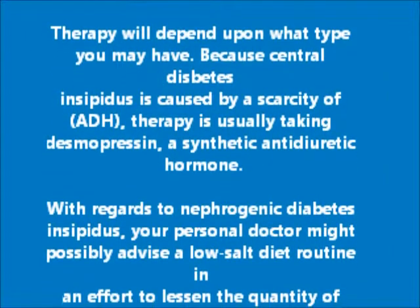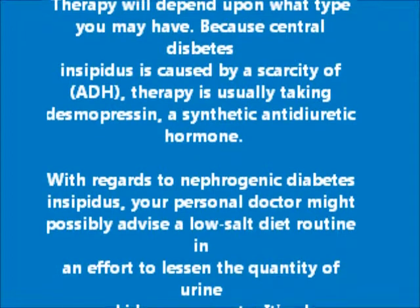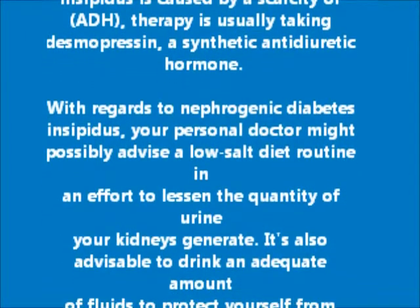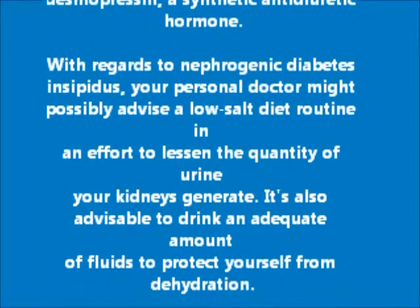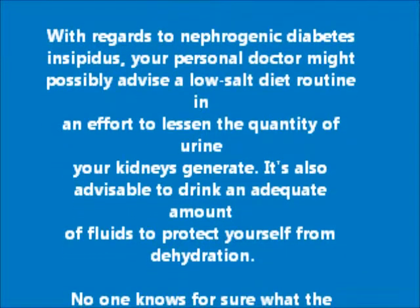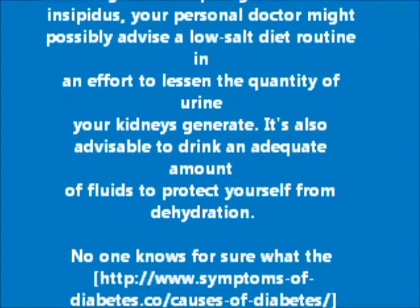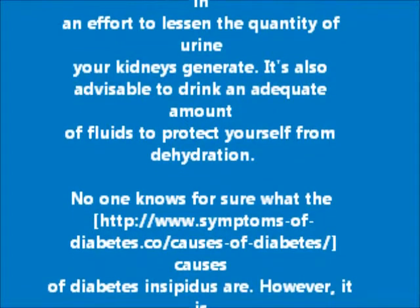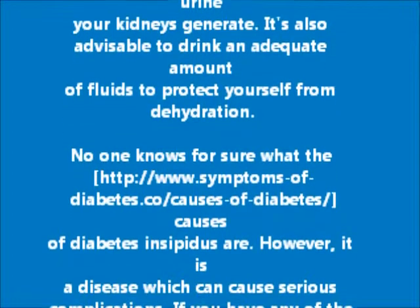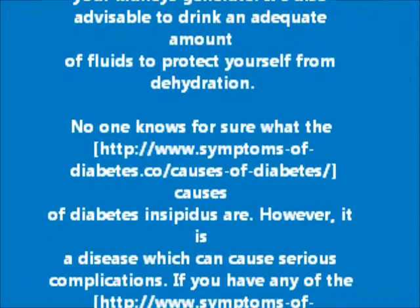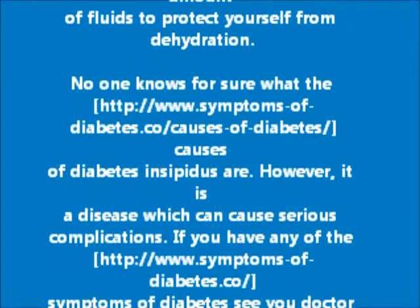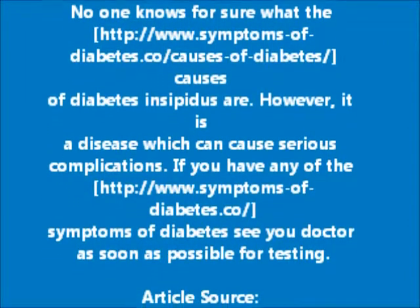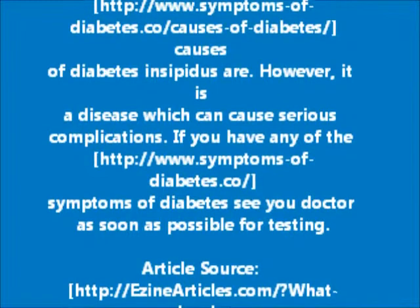Treatment will depend upon what type you have. Because central diabetes insipidus is caused by a scarcity of ADH, therapy usually involves taking desmopressin, a synthetic anti-diuretic hormone. For nephrogenic diabetes insipidus, your doctor might advise a low-salt diet in an effort to reduce the quantity of urine your kidneys generate. It is also advisable to drink an adequate amount of fluids to protect yourself from dehydration.